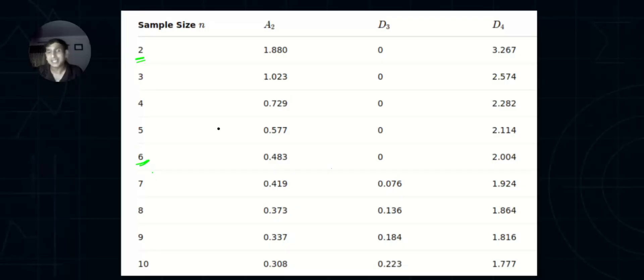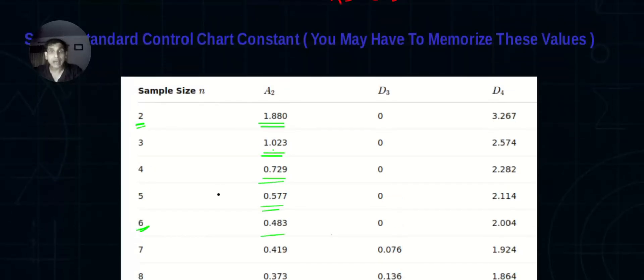In the beginning I told you, you need some standard industry values. It will be nice if you memorize the values at least from 2 to 5 or 2 to 6. In some universities they'll provide these values in the exam, in some they will not. So you may have to memorize these values. This A2 will be used in the x-bar chart. D3 and D4 will be used in the r chart.